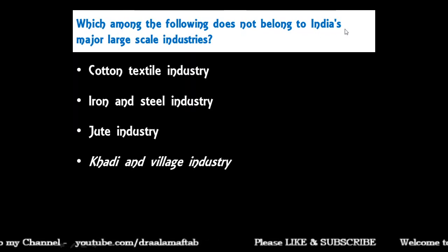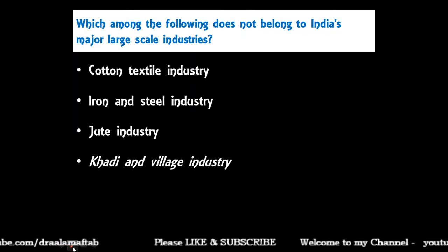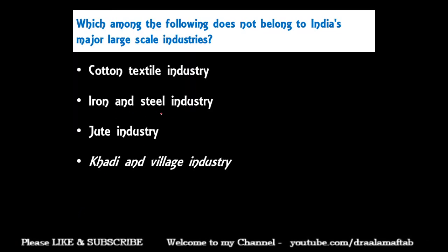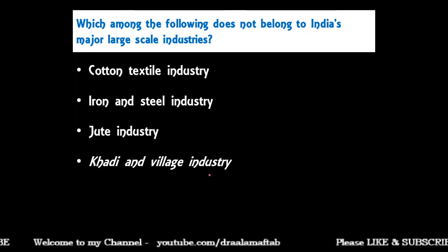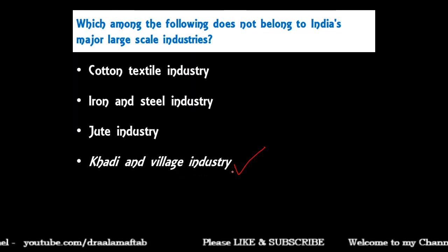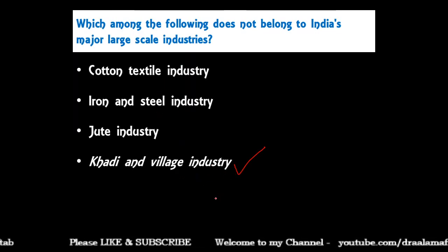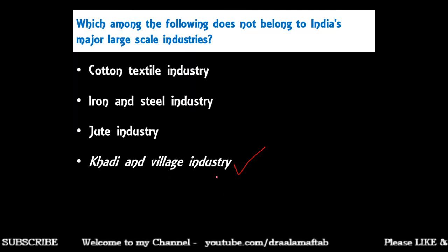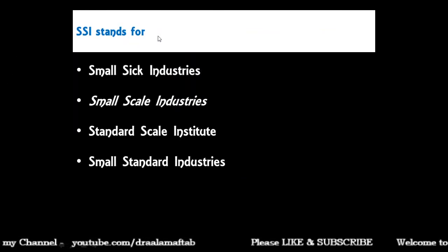Which among the following does not belong to India's major large scale industries: cotton textile industry, iron and steel industry, jute industry, or khadi and village industry? The correct answer is khadi and village industry — it is not a large scale industry. The above three are large scale industries, so the correct answer is KVI.